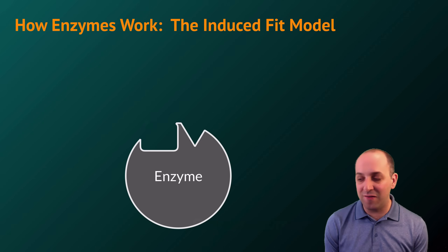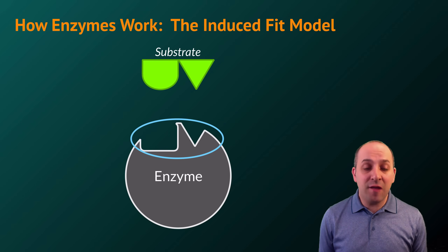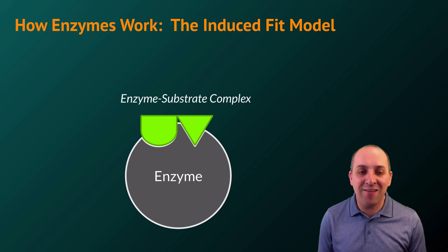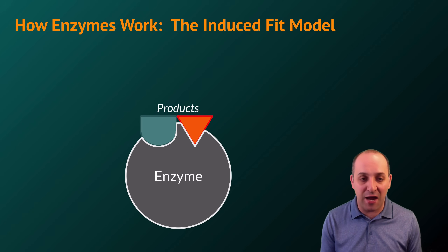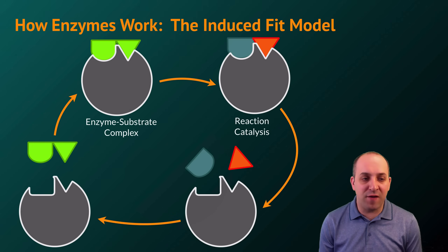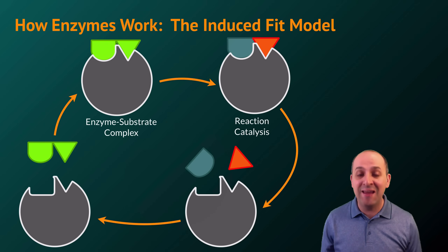The model we use to describe this is known as the induced fit model. Here is a particular enzyme and its substrate with the active site shown. The substrate physically associates with the active site, and the shape of the active site changes as the substrate binds to it. Once the substrate binds, it forms the enzyme-substrate complex. That change in the conformation of the active site is what catalyzes the reaction. Products are produced, and when released, the active site returns to its prior conformation. The shape of the substrate enables binding, and that conformational change is what enables the enzyme to work.